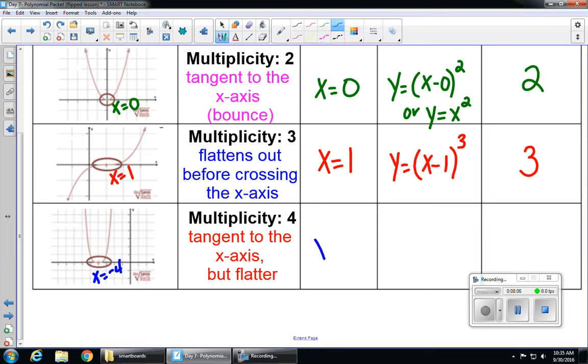So our zero, or our x-intercept, which is also known as our root, is x equals negative 4. And our equation here would be y equals (x plus 4) to the fourth, because we now know that our multiplicity matches the exponent, which also matches our degree.